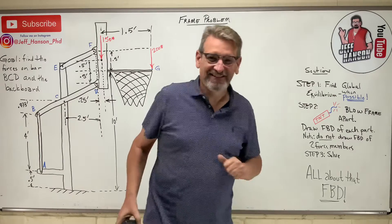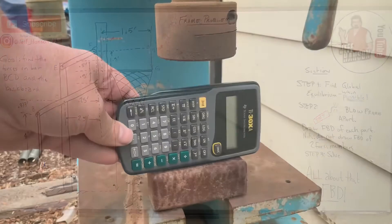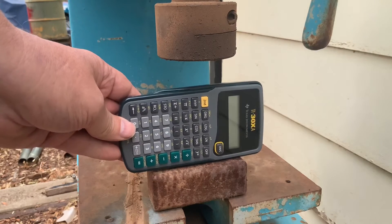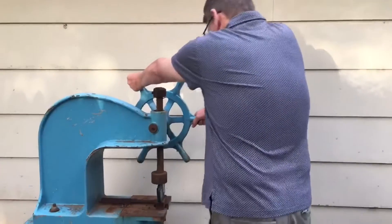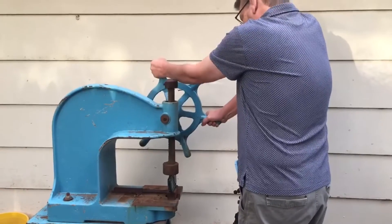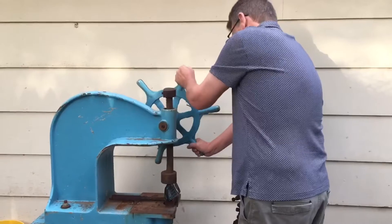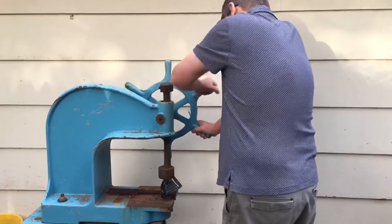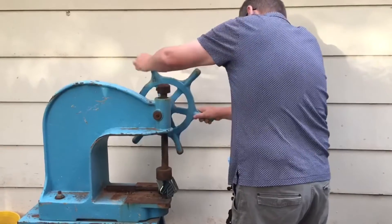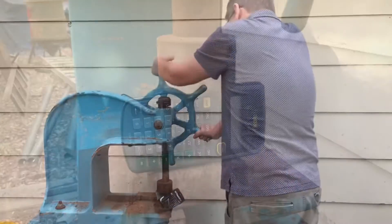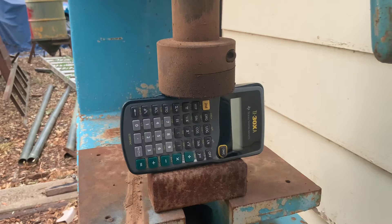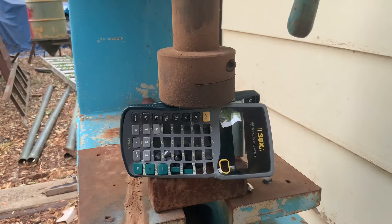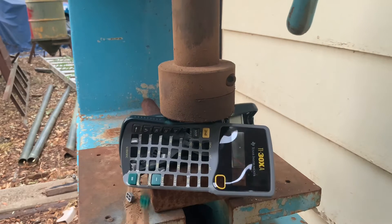Here we go. We've got our five and a half ton backyard arbor press. Let's see what happens when we turn the crank. Five and a half tons — all the keys are falling out!